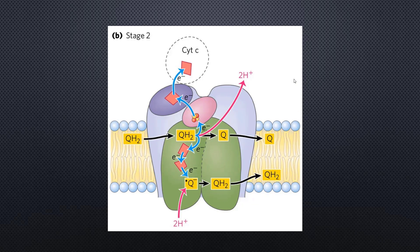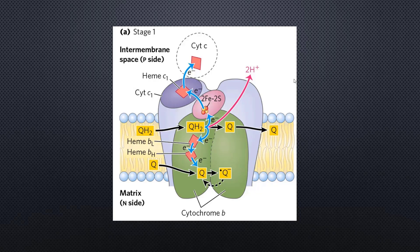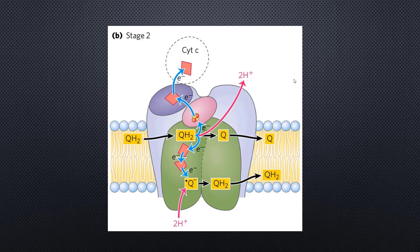Coming on to stage 2 of the Q cycle — here, the same event almost perpetuates with some critical differences. A separate ubiquinol molecule, generated either by complex 1 or complex 2 — NADH dehydrogenase or succinate dehydrogenase — traverses and attaches with the cytochrome B complex again. One electron from QH2 takes the route of heme BL and heme BH in cytochrome B. The semiquinone radical generated in stage 1 returns to the cytochrome B complex, accepts one more electron, and is completely reduced.